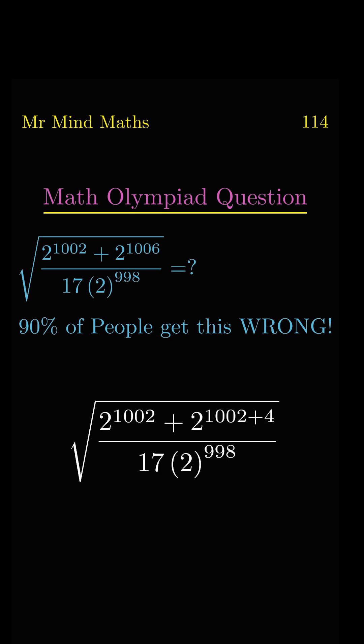Now here we will use the property: as the base is the same, the powers will be added. If the power is added, then we can separate the bases. Now we will take common 2 power 1002 from the numerator.